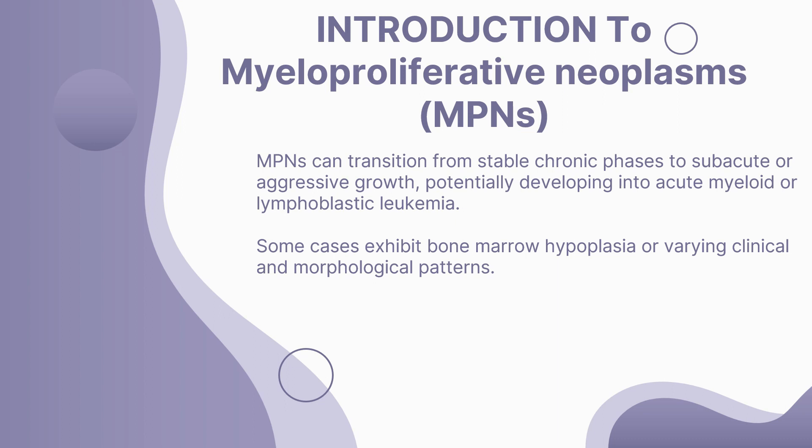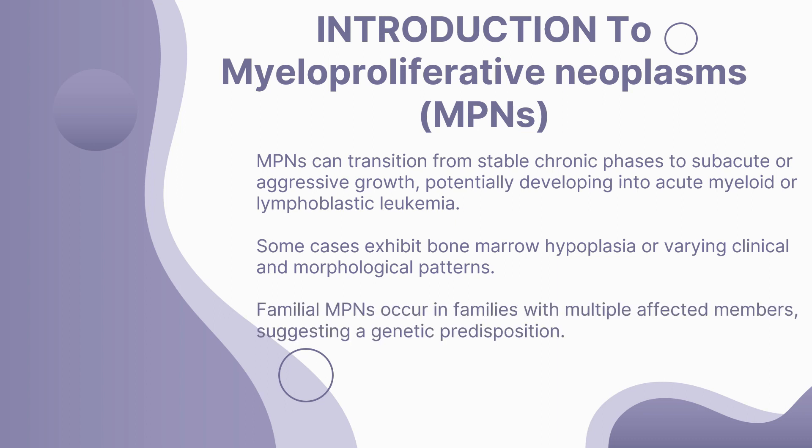Familial MPNs occur in families with multiple affected members, suggesting a genetic predisposition. Myeloproliferative neoplasms represent a complex world where genetic mutations disrupt the symphony of blood cell production, leading to a variety of conditions with their own stories to tell.